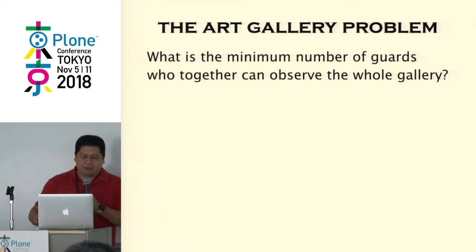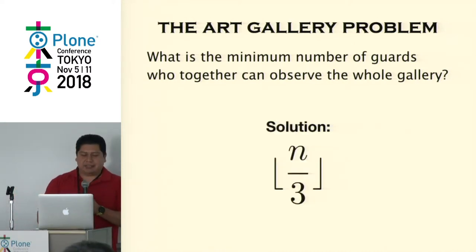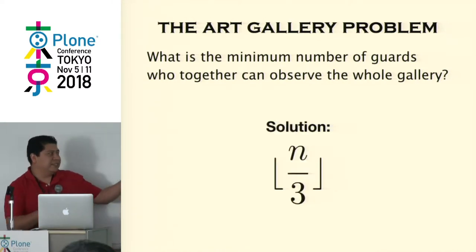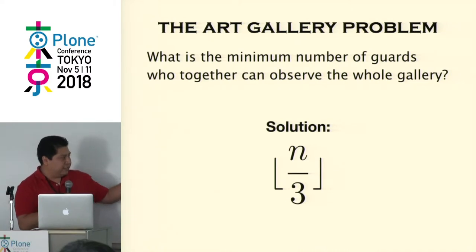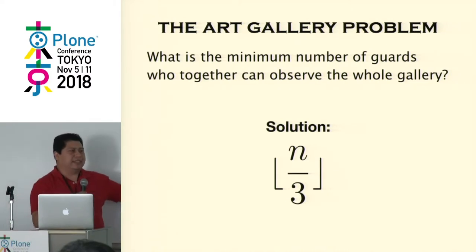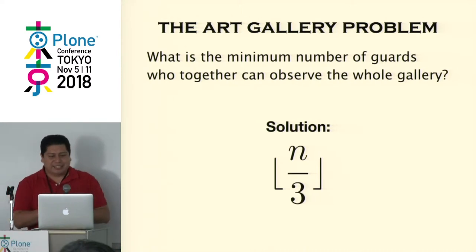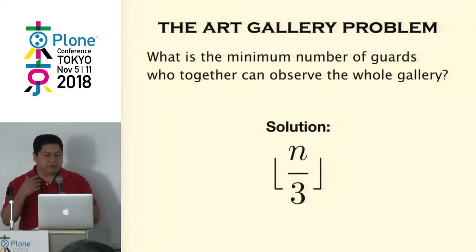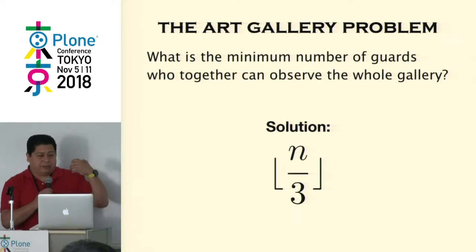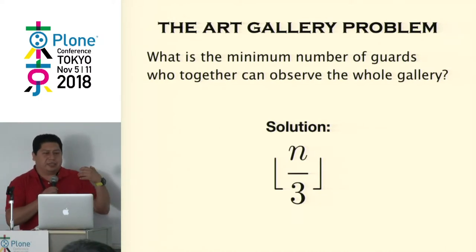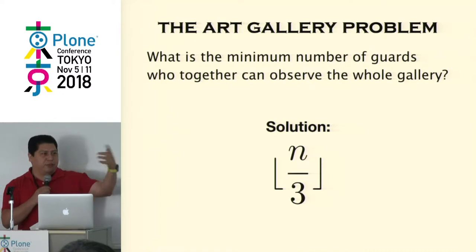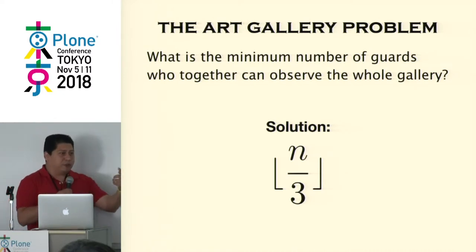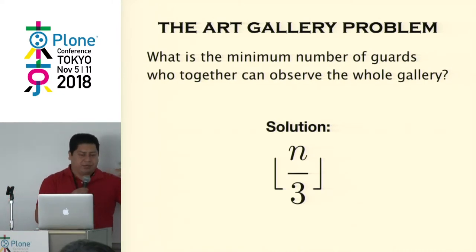This problem is very old. The answer, if you're wondering, is you need n over three, where n is the number of corners in the gallery. They also solve modified versions — for example, if a guard has superpowers and can see through one wall or two walls, how many guards are needed then.